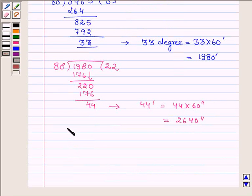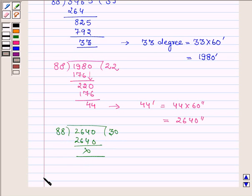Now let us divide 2640 seconds by 88, and we have 3. 264 into 0, and the remainder is 0. So 11 upon 16 radians is equal to 39 degrees, 22 minutes, and 30 seconds.